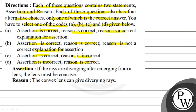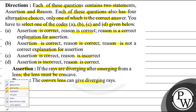Now the assertion given is: if the rays are diverging after emerging from a lens, the lens must be concave. And the reason given is: the convex lens can give diverging rays.